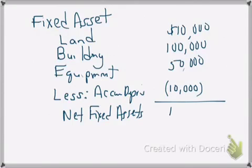In this case, the net amount would be $150,000, and that would move over to a different column. That is really what you're looking at with the fixed asset section.